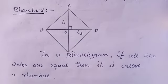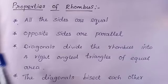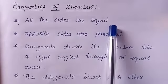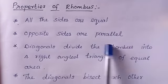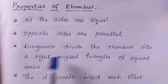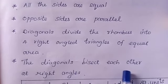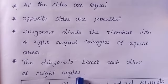Properties of a rhombus: all sides are equal; opposite sides are parallel; diagonals divide the rhombus into four right-angle triangles of equal area; and the diagonals bisect each other at right angles.